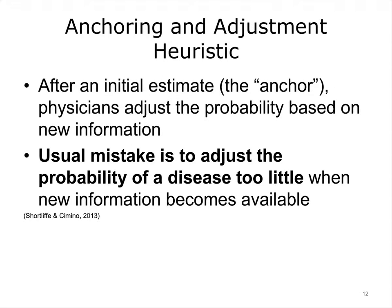A third common cognitive heuristic is the anchoring and adjustment heuristic. Physicians make an initial estimate of the probability of a diagnosis such as a heart attack, then adjust the probability when new information is received, such as laboratory tests. The usual mistake is that in light of new information, the probability of a given disease is adjusted too little.